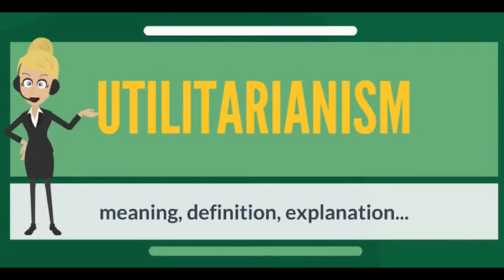John Stuart Mill expanded this concept of utility to include not only the quantity, but quality of pleasure, while focusing on rules instead of individual moral actions. Others have rejected that pleasure has positive value and have advocated negative utilitarianism, which defines utility only in terms of suffering. As opposed to this hedonistic view, some define utility with relation to preference satisfaction, whereas others believe that a range of values can be included in its definition.